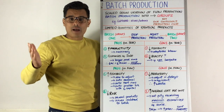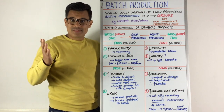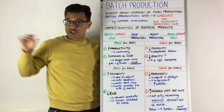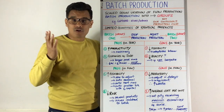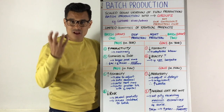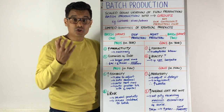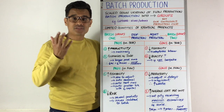When looking at batch production, you need to be clear that it sits in the middle — on one side you've got job production, and on the other side you've got flow production. So when comparing batch production, the pros and cons are different depending on what you're comparing it to.